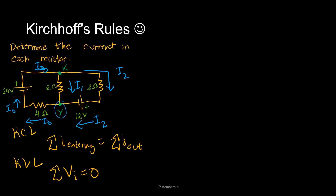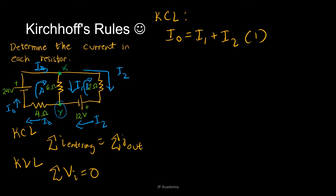We define two loops: loop A and loop B. Let's start with the KCL — the junction rule. At junction X, the incoming current I0 must equal the currents going out, which are I1 and I2. So we have I0 = I1 + I2 — let's call this equation 1. For junction Y, I2 + I1 = I0, which is the same equation, so one equation is sufficient.